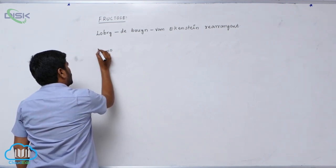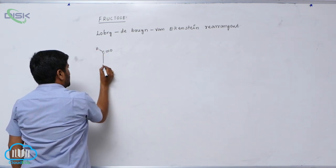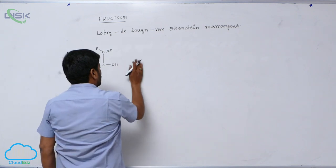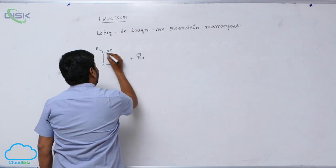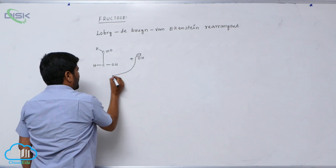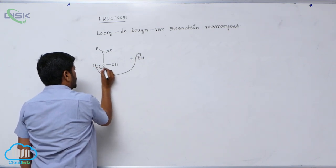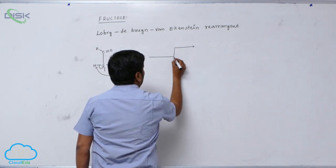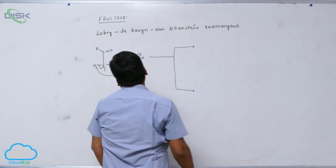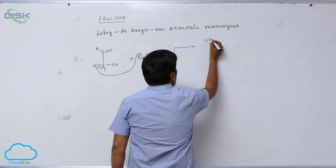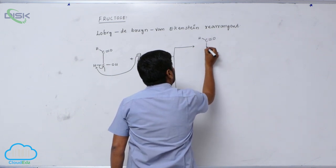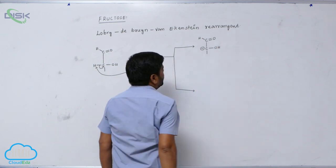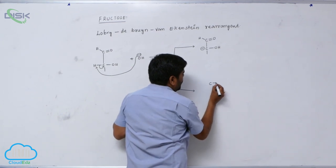The mechanism begins with a C=O group with a hydrogen on the adjacent carbon. When a base is added, the carbonyl acts as an electron-withdrawing group, causing it to abstract a proton from the adjacent carbon. This generates a carbanion intermediate with a negative charge on carbon, with an OH group adjacent.